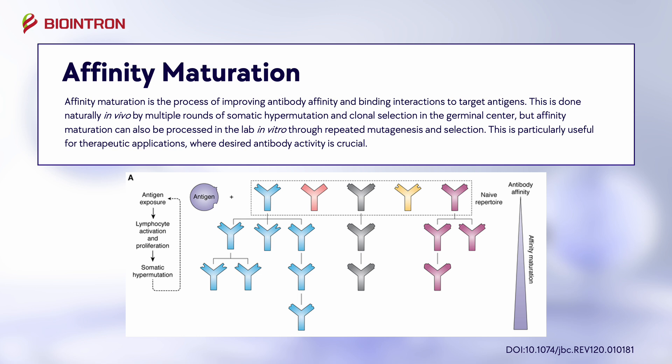This is done naturally in vivo by multiple rounds of somatic hypermutation and clonal selection in the germinal center, but affinity maturation can also be processed in the lab in vitro through repeated mutagenesis and selection.